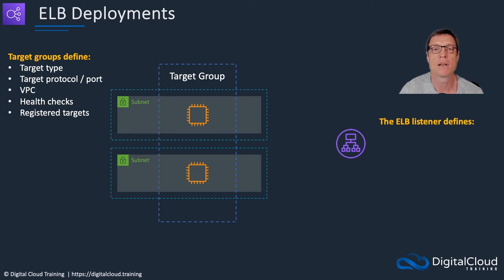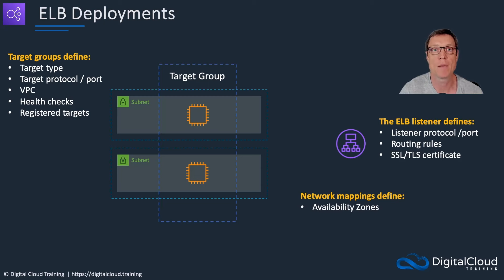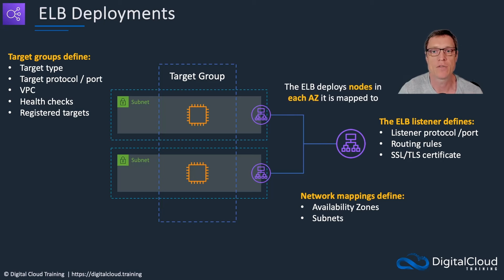We then have our load balancer, which has a listener. Here we define the protocol and port that the load balancer listens on, and this can be different to the target group protocol and ports. We have routing rules for an application load balancer and we can assign certificates for encryption as well. We can also define the network mapping — which availability zones and subnets our instances are going to be registered into. When we define those availability zones and subnets, the load balancer deploys its nodes into each availability zone that it's mapped to.